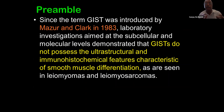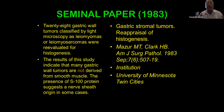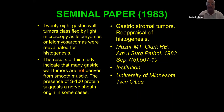Lab investigations aimed at the subcellular and molecular levels demonstrated that GISTs do not possess the ultrastructural and immunohistochemical features characteristic of smooth muscle differentiation seen in leiomyomas. The seminal paper was published in the American Journal of Surgical Pathology in 1983. They studied 28 gastric wall tumors classified by light macroscopy and found they were not derived from smooth muscle. The presence of S100 protein suggested a nerve sheath origin in some cases.